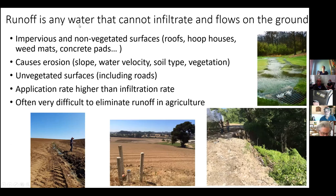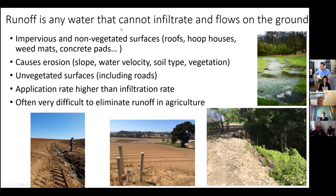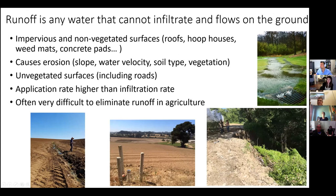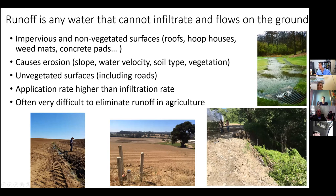Runoff is any water that flows on the ground in your operation — whether it comes from your irrigation system, from rain, from employees washing buckets or machinery. Any water that flows on the ground is runoff. The challenge is that water flows by gravity and ends up in a storm drain. If that is outside of your property, that's considered discharge and that's regulated.